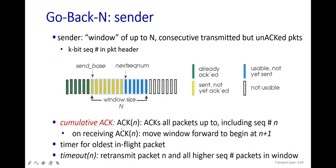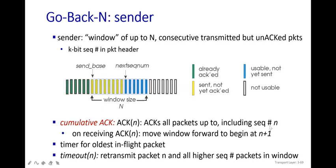You have to calculate cumulative acknowledgement — acknowledgement of N packets. Since we send N packets, we must receive N acknowledgements. If we are not receiving that many acknowledgements, it means a packet was lost somewhere. This is known as cumulative acknowledgement: acknowledgement for all packets up to and including sequence N.